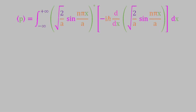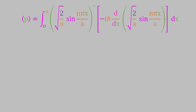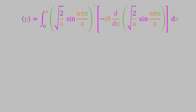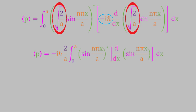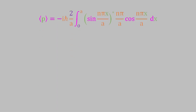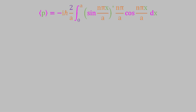Just like last time, we can change the limits to 0 and a because those are the edges of the box, and once again the complex conjugate of the wave function is the same as the actual wave function. However, this time we can't multiply the two wave functions together yet because the operator tells us we first need to take the derivative of the second appearance of the wave function. We can still multiply all the constants together and take them out of the integral—the constants are the square root of 2 over a and negative i h-bar. Now we'll take the derivative of the wave function, which gives us n pi over a times cosine of n pi x over a. Since n pi over a is a constant, we take that out of the integral too.